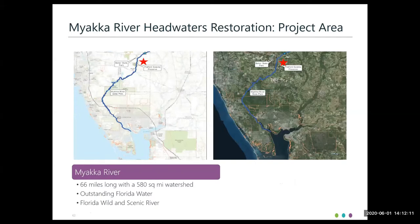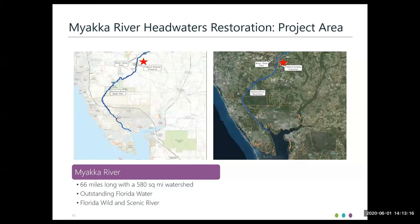Here are two maps showing the project location in a regional context — a streets map on the left and an aerial map on the right, both covering the same area. That long blue line is the Mayaka River, which is 66 miles long. The red star represents the project area up at the top of the watershed. The river flows through Becker State Park, Flatford Swamp, and the Mayaka River State Park, ultimately draining into Charlotte Harbor. The watershed has a total drainage area of 580 square miles. The Mayaka River is designated as both an outstanding Florida water and a Florida wild and scenic river.